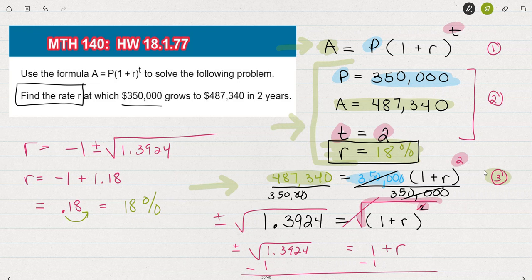Step 3. We plug those values into the formula and solve for our variable r. Because this one was a quadratic and we had this quantity squared, isolated, we could do the square root of both sides to get rid of that radical. And we were left with 1 plus r is equal to plus or minus the square root of 1.3924. Solving for r by subtracting 1 from both sides gave us the 18 hundredths, which is 18 percent interest rate.